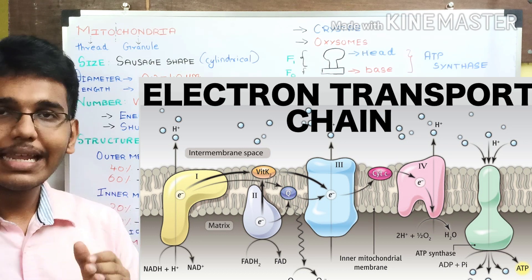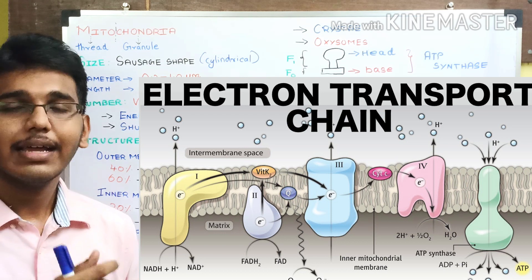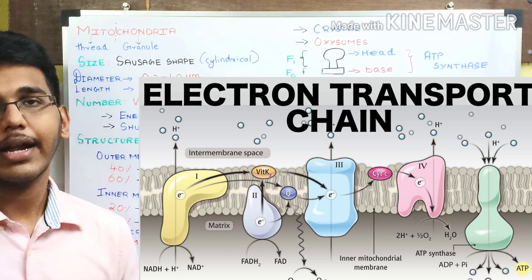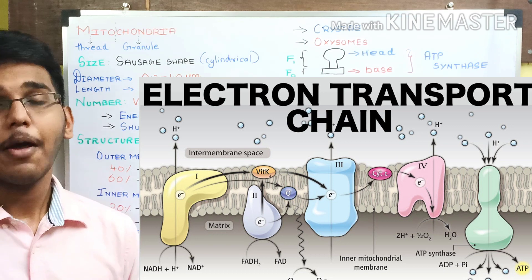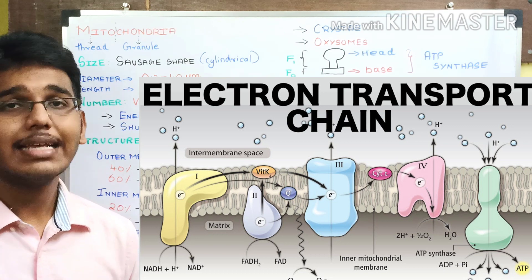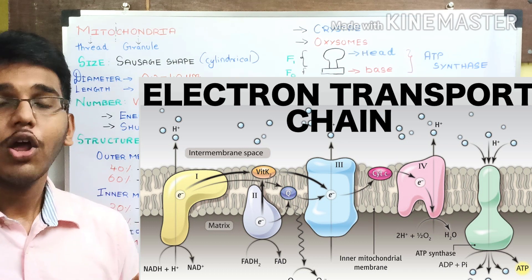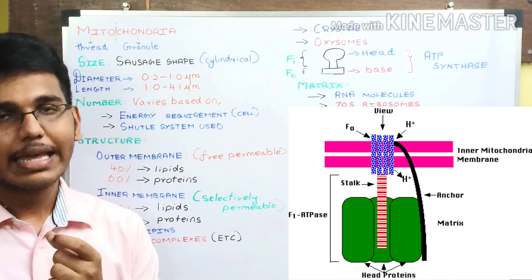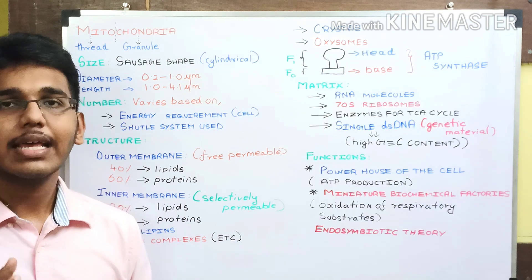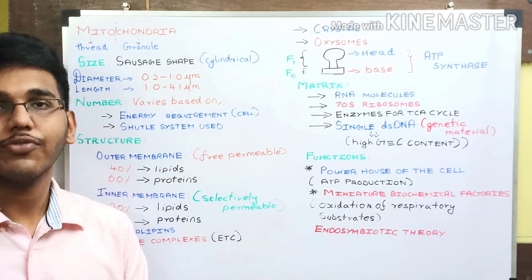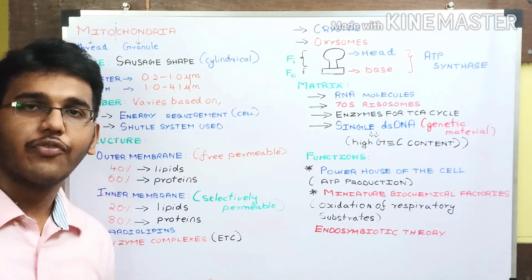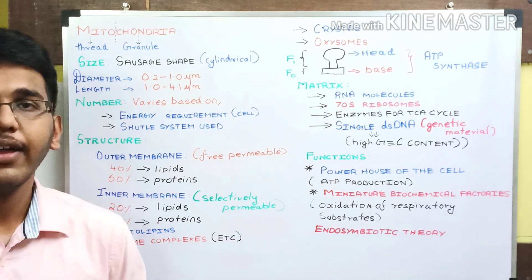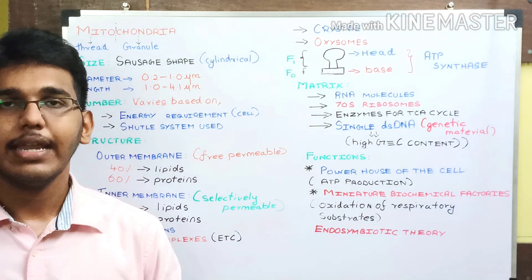The proton gradient increases inside the intermembrane space and decreases inside the mitochondrial matrix. To stabilize this gradient, protons re-enter the mitochondrial matrix through the ATP synthase enzyme complex. When a proton moves through ATP synthase, it rotates the F1 particle — the biochemical rotary engine — which ultimately produces ATP molecules by harnessing the kinetic energy of the protons. This is how the enzyme complexes in the inner mitochondrial membrane help in ATP production.